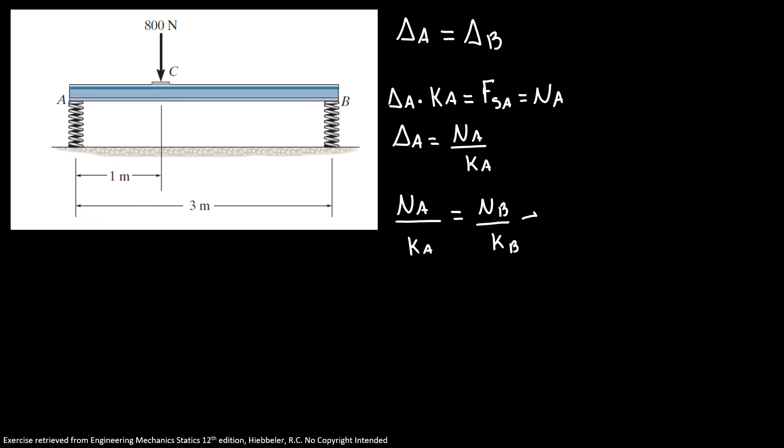So our expression for KB equals KA times normal B divided by normal A. So our KB equals 5 times 267 divided by 533. So the stiffness at B equals 2.5 kilonewtons per meter.